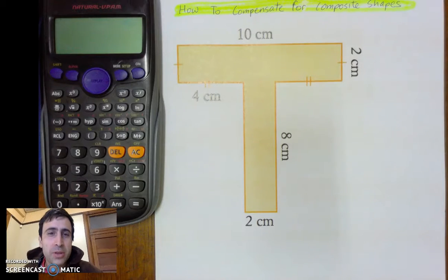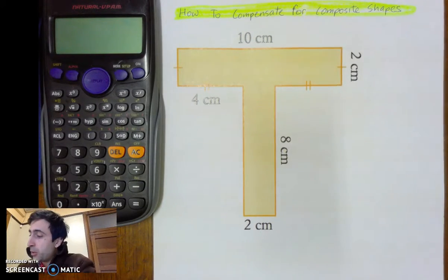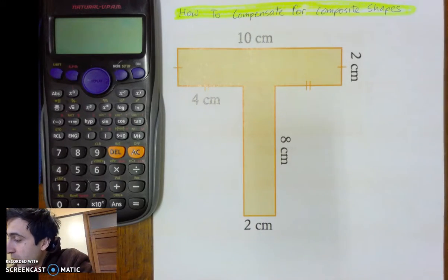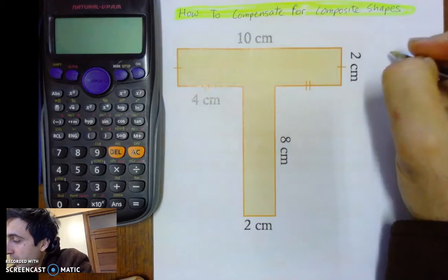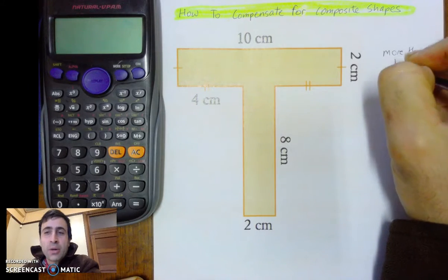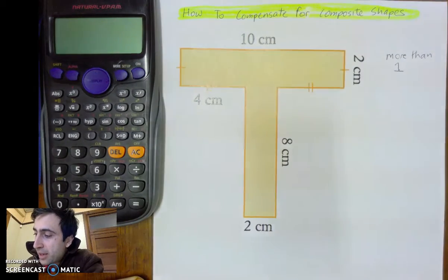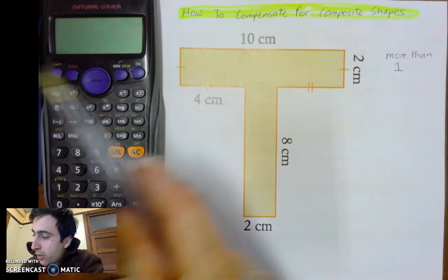The word composite means made up of more than one thing. The word composite means more than one. And so a composite shape by definition is a shape that is made up of more than one shape.